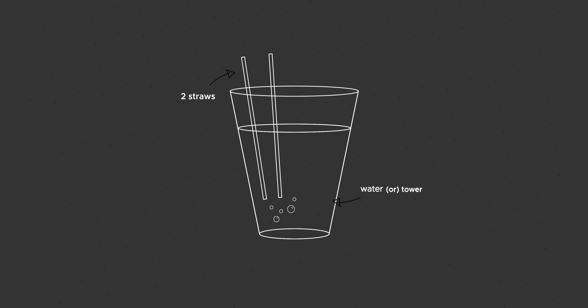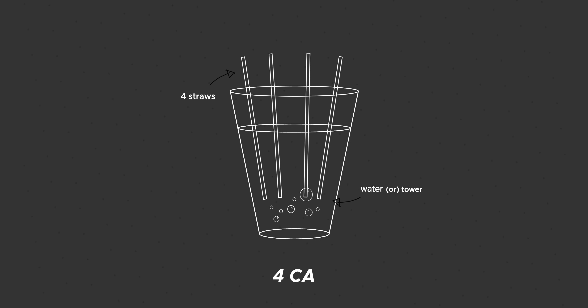Similar to 5G, 4G also has bands. For example, Band 3 operates somewhere between 1700 to 1900 MHz. There are multiple frequencies or straws within the same band. Similarly, you have Band 5, Band 40, and so on. If you combine two carriers, it's 2CA. If you combine three frequencies, it's 3CA. Four gives you 4CA, and maximum it can go is 5CA. In India as of now, there's no 5CA because network providers haven't implemented that far yet.